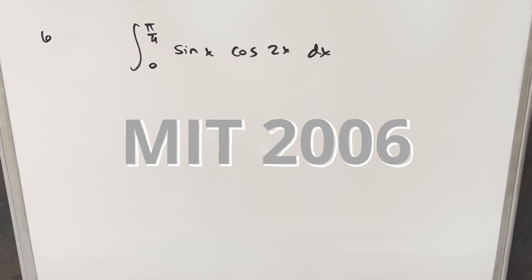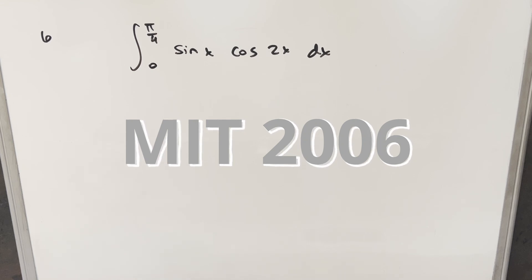We have here today another integral from the MIT Integration Bee from 2006. This one's problem 6. We have the integral from 0 to π/4 of sin(x) cos(2x) dx.